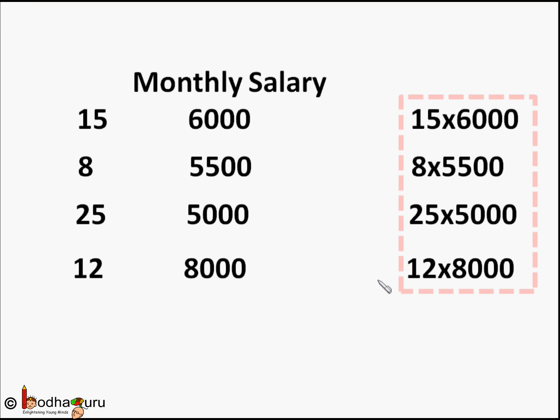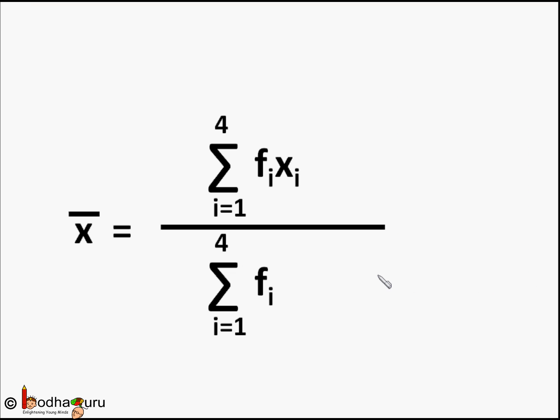So let us learn the new formula of mean for such cases. In brief we write it as sum of fi into xi where i varies from 1 to 4.